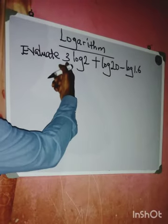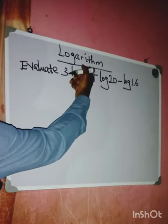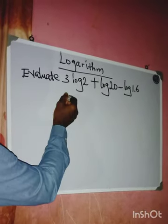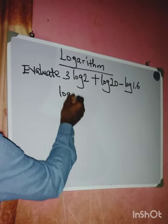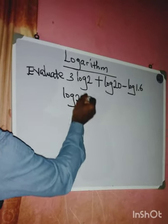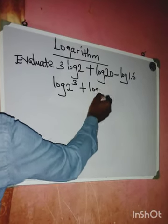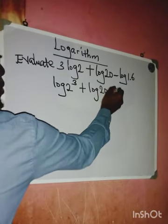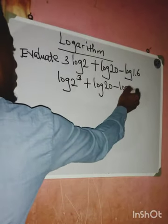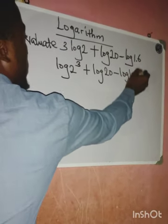According to the law of logarithm, anything at the back was the power before, so we're going to have it this way: log 2 to power 3 plus log 20 minus log 1.6.